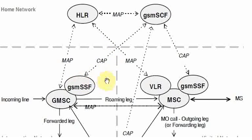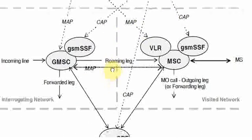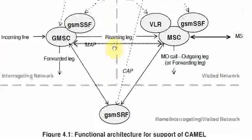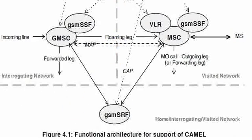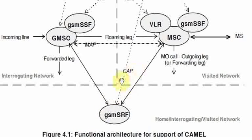So there is the phase 1 architecture of CAMEL. In the phase 2 architecture, the GSM-SRF function is introduced, which provides IVR services.